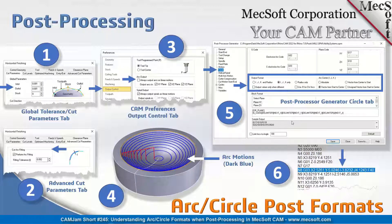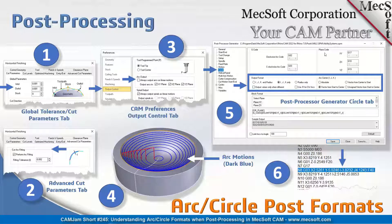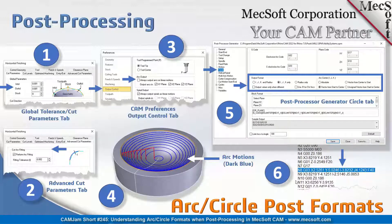In item number five, there is a tab in the post-process generator specifically for arcs and circles. You see the circle item selected on the left. You have G-code values at the top for your clockwise arc and counterclockwise arc, and the plane codes — G17, G18, and G19 — as mentioned. Typically you don't want to mess with those since they're standard and already set. Underneath that, you see arc output format options for arcs, and there are a lot of options here. Your machine controller may expect the arc formatted in a certain way.